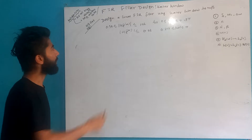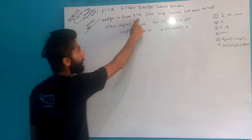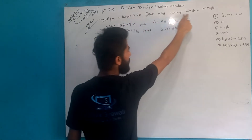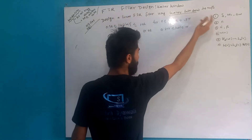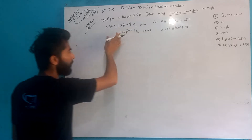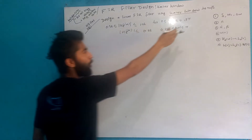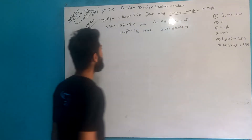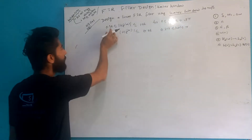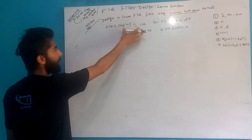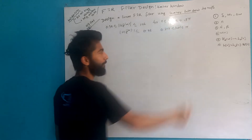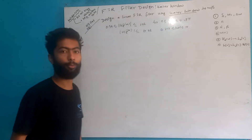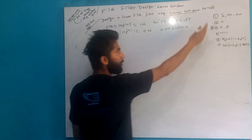Question: Design a linear FIR filter using the Kaiser window to meet the following specifications. The passband ripple is 0.98, and we have the following frequency and attenuation constraints.